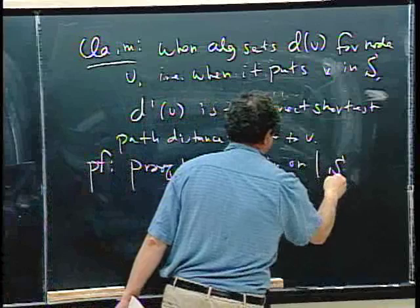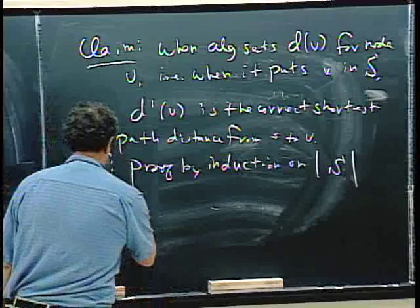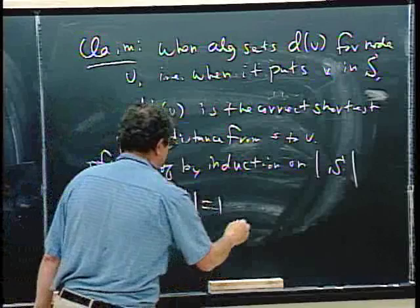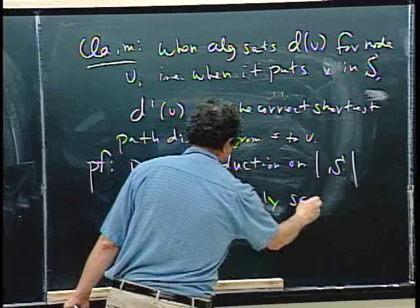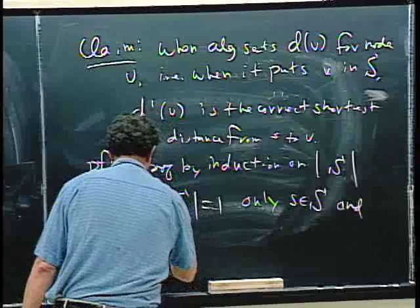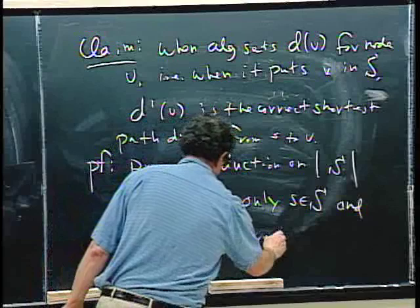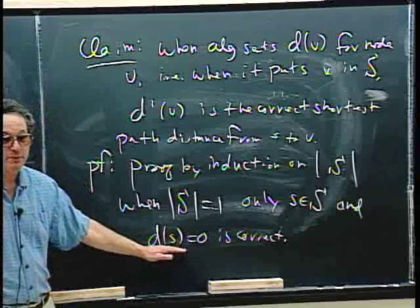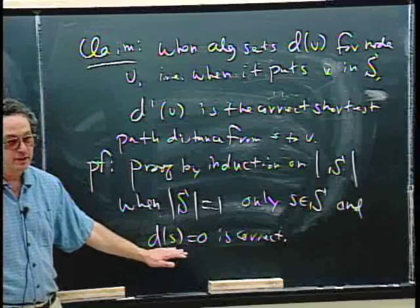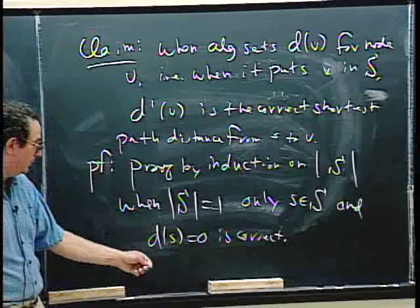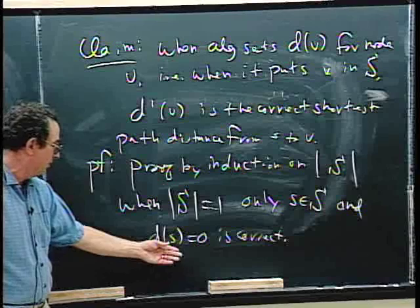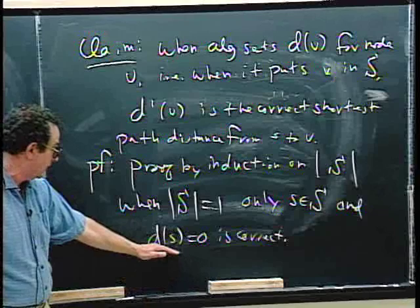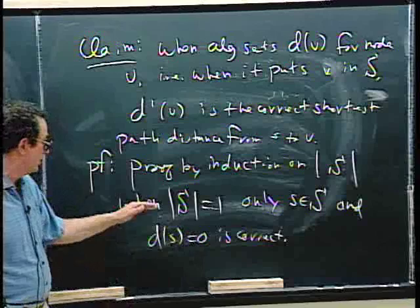The proof is by induction on the size of capital S. Initially, when |S| = 1, only little s is in S, and D(s) = 0 is correct — the distance from s to itself is zero. The algorithm certainly does the right thing for little s.